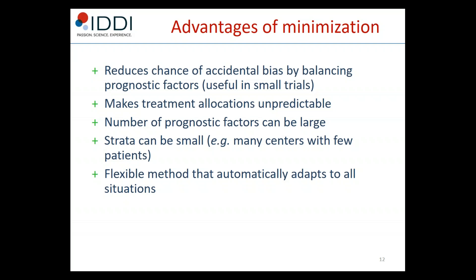Minimization also makes treatment allocations unpredictable. Other advantages include: the number of factors used in the minimization algorithm can be large — it's actually better with a large number of factors — while the strata can be small. This is very commonly the case in cancer trials or ophthalmology trials with multi-center designs and many small sites with few patients each. Perhaps the main advantage of minimization is that it's a flexible method that automatically adapts to almost every situation.